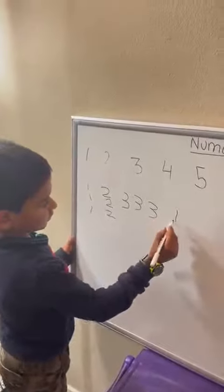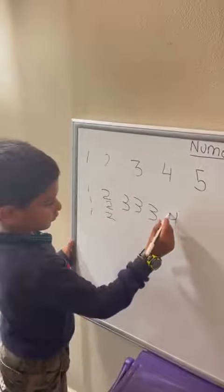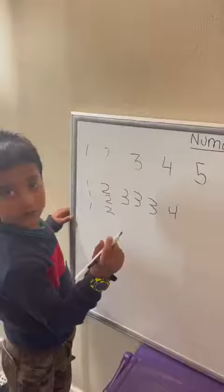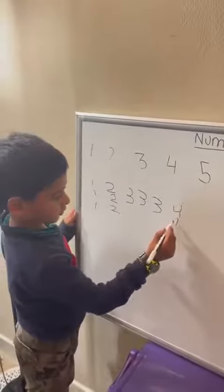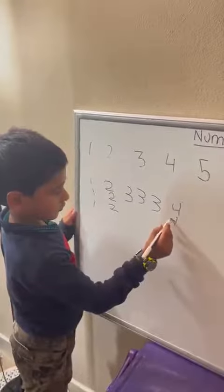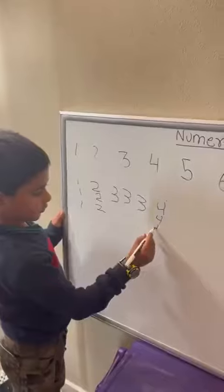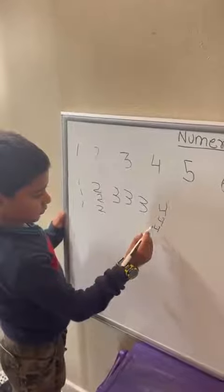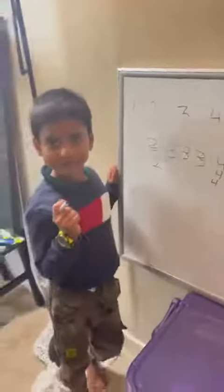Down, over, down some more. Down, over, down some more. Down, over, down some more, to make the new row four.